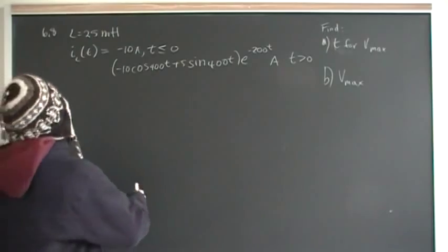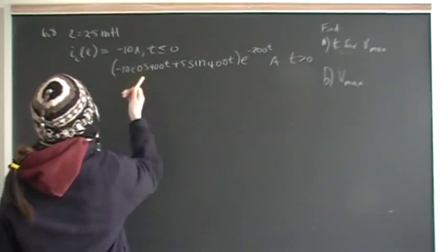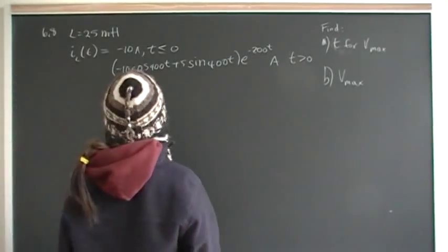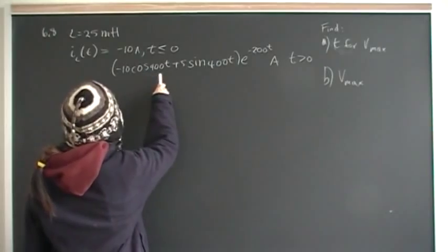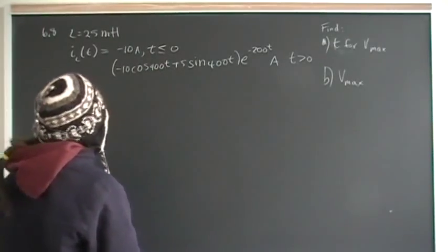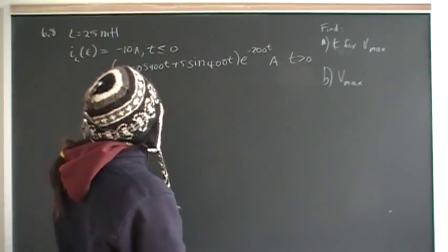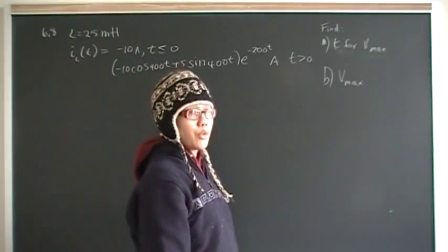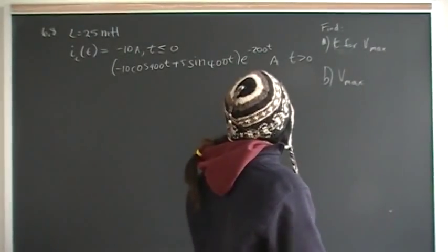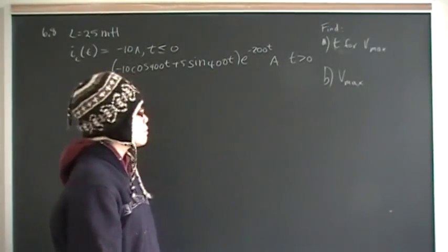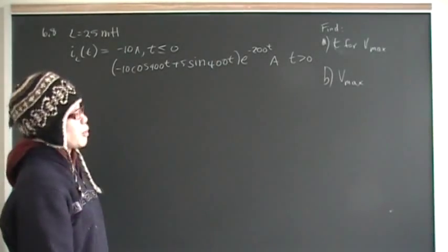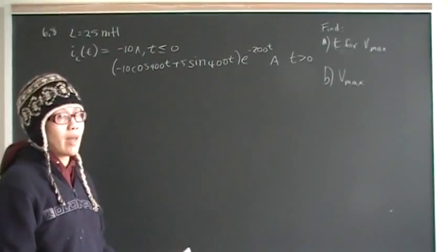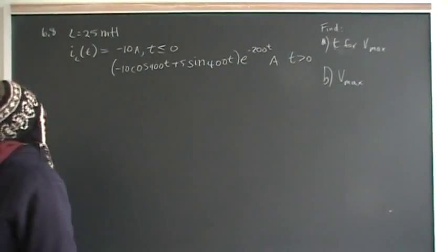For this problem, we have a current that we know to be negative 10 amps before time 0. After time 0, the current is negative 10 cosine 400t plus 5 sine 400t, times e to the minus 200t amps. What we're looking for is, in part A, the time where the voltage is a maximum, and in part B, what exactly is that voltage at that time.